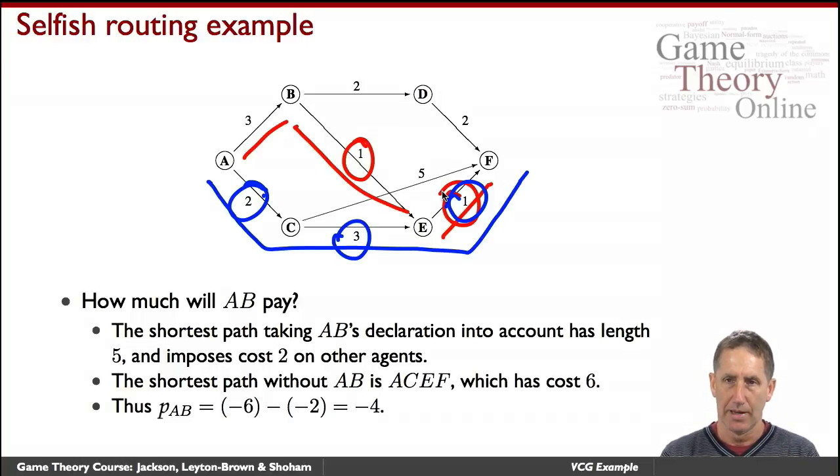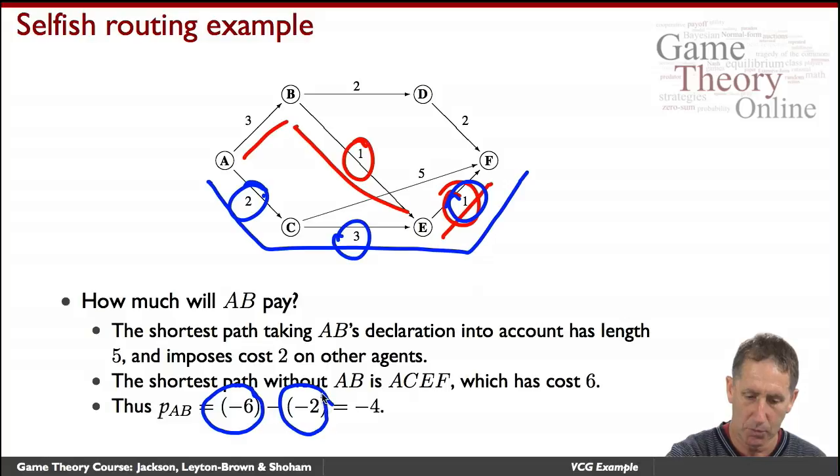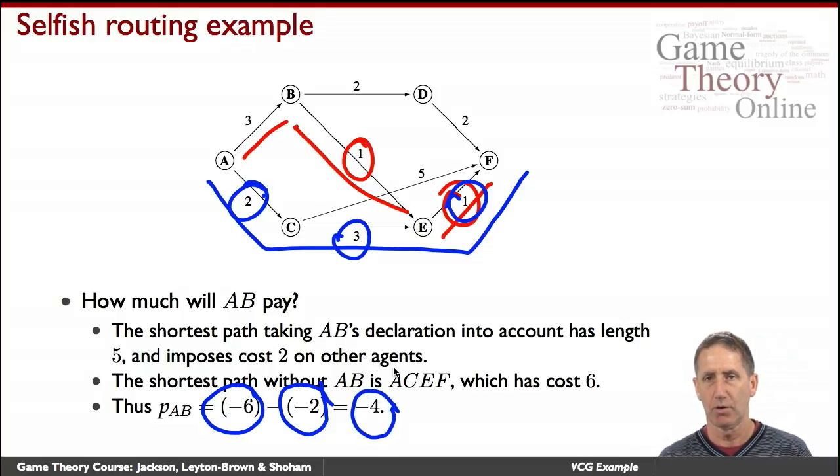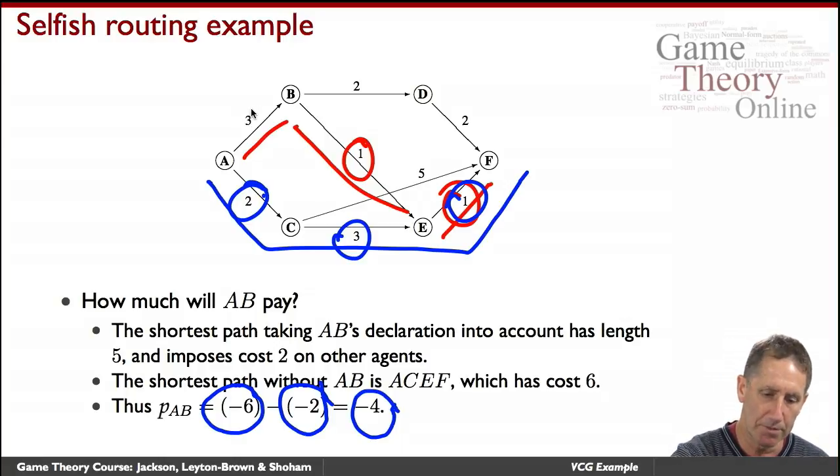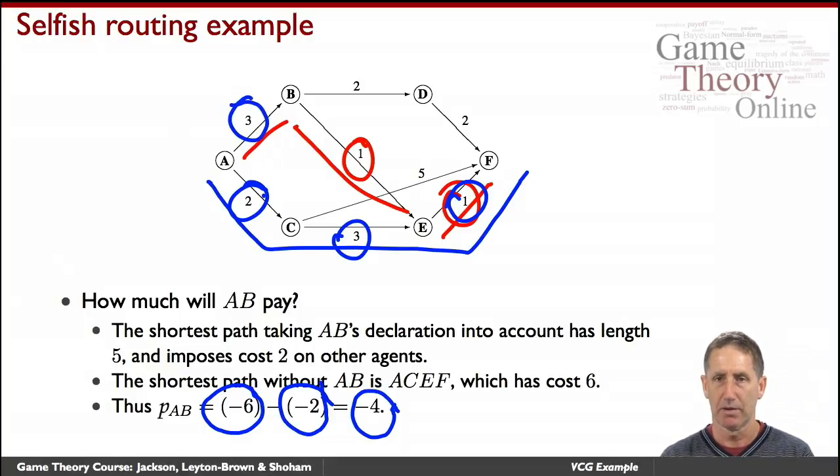So this would have been the shortest path at a cost of 2 plus 3 plus 1, which is 6. The cost to the agent AB is the difference: p_AB = (-5) - (-5) = 0. This is what we expect, since AC's declaration also has length 5. Thus, p_AC = (-5) - (-5) = 0. And so the payment to AB is (-6) - (-2) = -4, meaning AB gets a payment of 4, making a profit of 1.